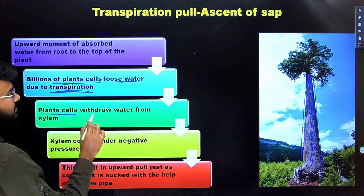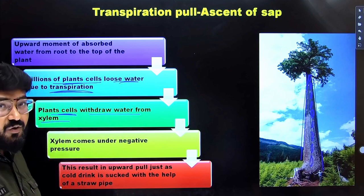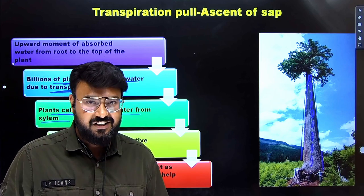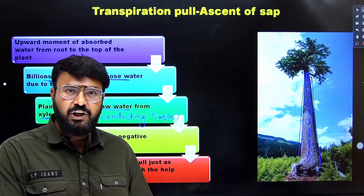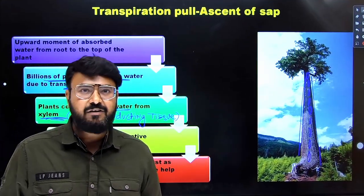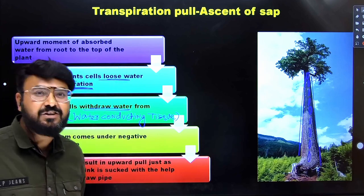The plant cells, they start withdrawing water from the xylem. Now xylem, we know it's a water conducting tissue and phloem is a food conducting tissue. So when billions of plant cells are continuously withdrawing the water from the xylem, it's a water conducting tissue.